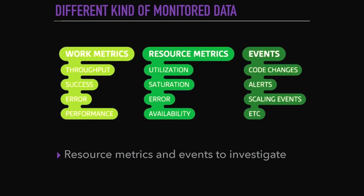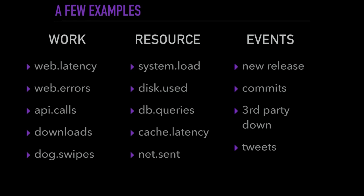And then you'll have other kinds of monitored data that you can collect: resource metrics from the system, events — all these things will be there in a second pass to help you investigate and diagnose. In our dating app example, you'll have as work metrics things like latency, errors, number of calls, number of swipes inside your app.